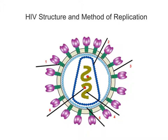Hello everyone. In this video we're going to be talking about the human immunodeficiency virus or HIV. We're going to talk specifically about its structure and its method of replication. For a virus to be able to replicate, it needs to be inside of a host cell. We'll talk about the key structural components on this diagram and then how it actually replicates using said host cell.